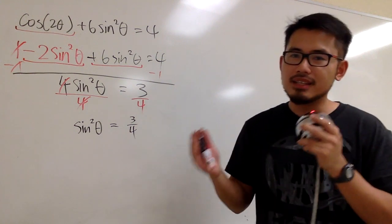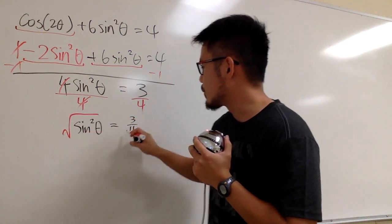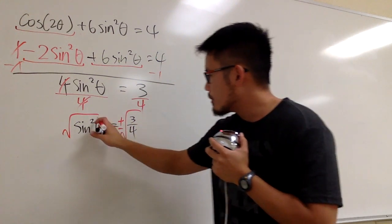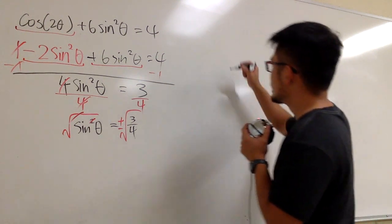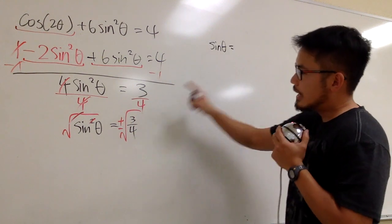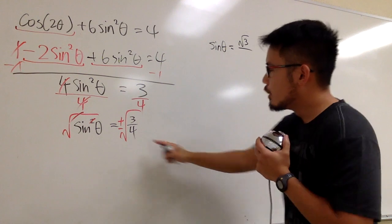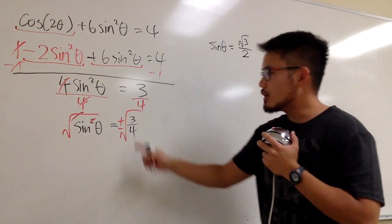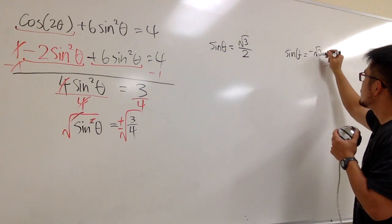I want to isolate the sine theta part. This is sine squared theta, so we can just take the square root on both sides — and don't forget to attach the plus or minus on the number side. The square root cancels and we have two things to consider: sine theta equals positive square root of 3 over 2, and also the negative version: sine theta equals negative square root of 3 over 2.